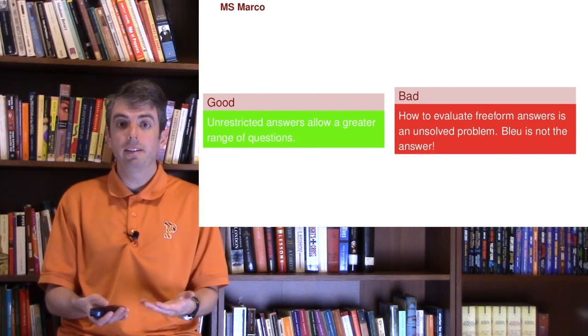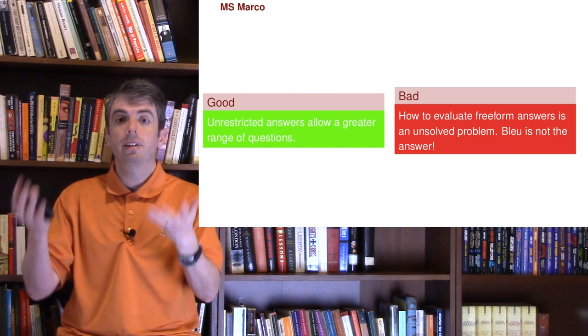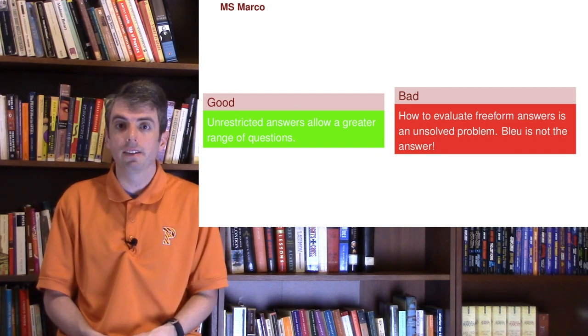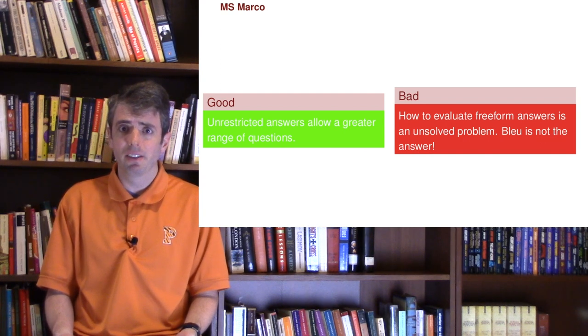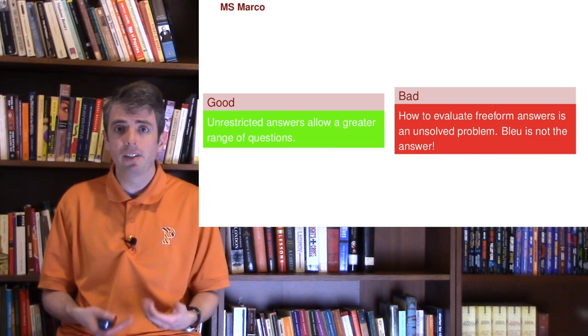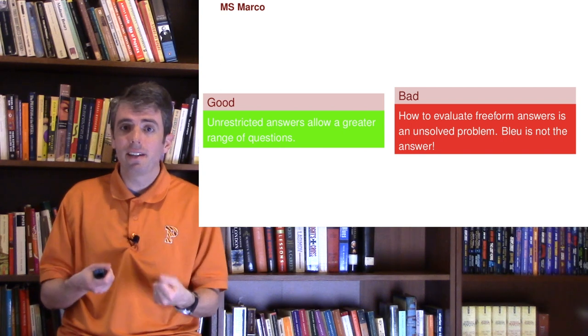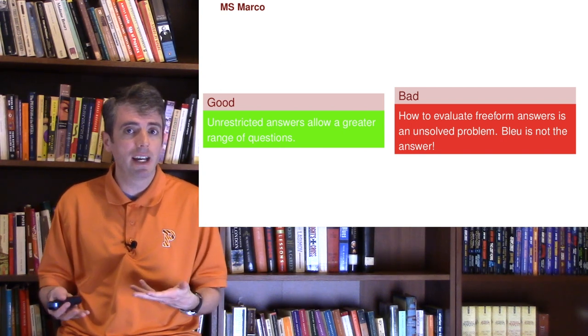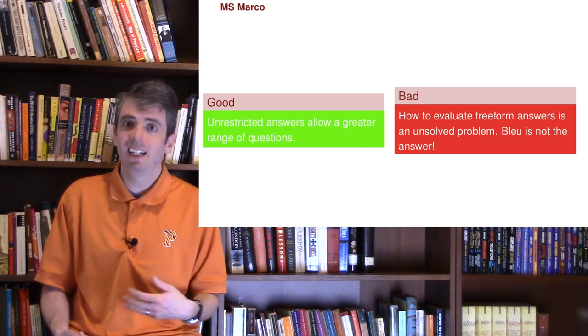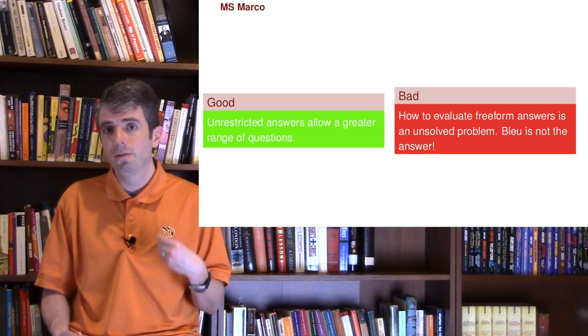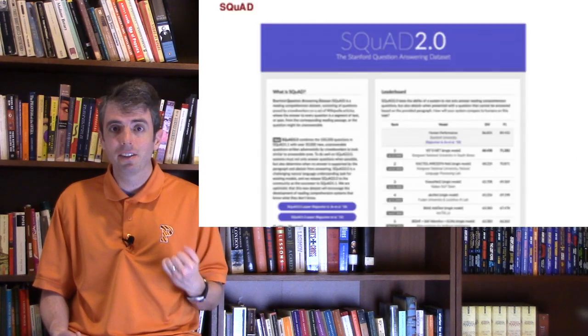The other nice thing about this is that there are unrestricted answers. Anything could be an answer. But then the hard part is how do you then evaluate those answers? You can't do string matching or things like that. USA and United States of America could both be the answer to the same question. But if you're string matching against USA, that's not going to give you a satisfying response.